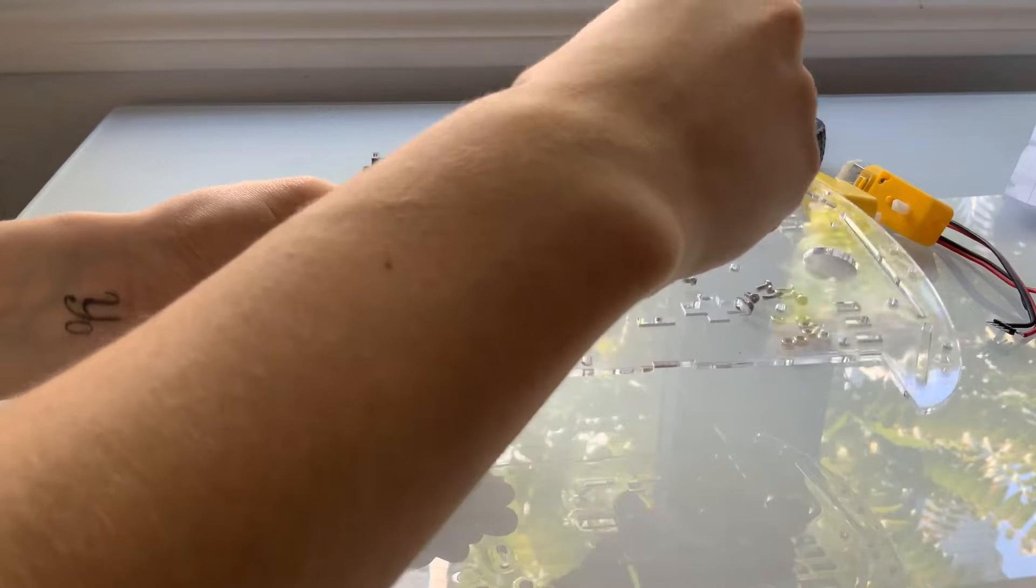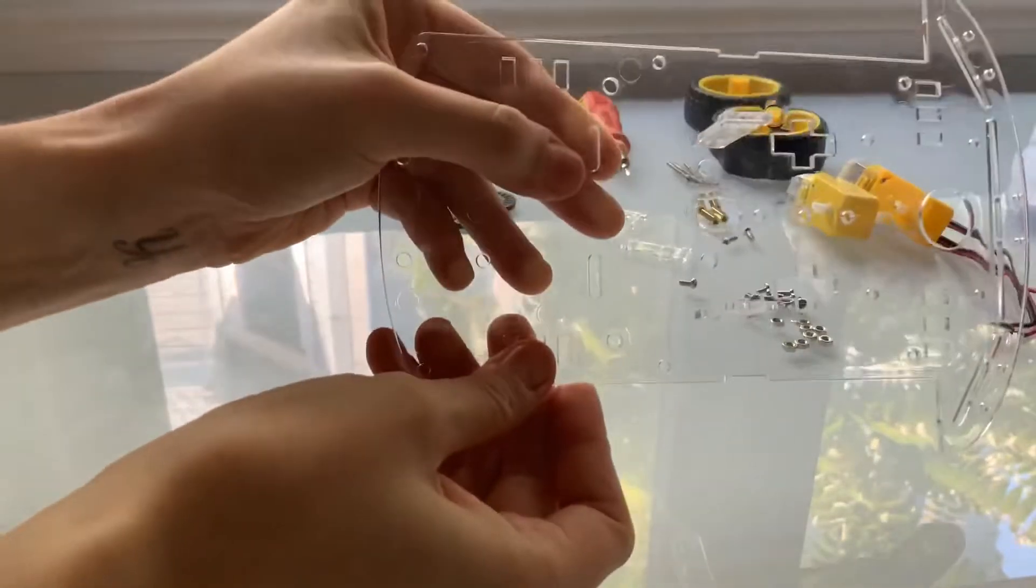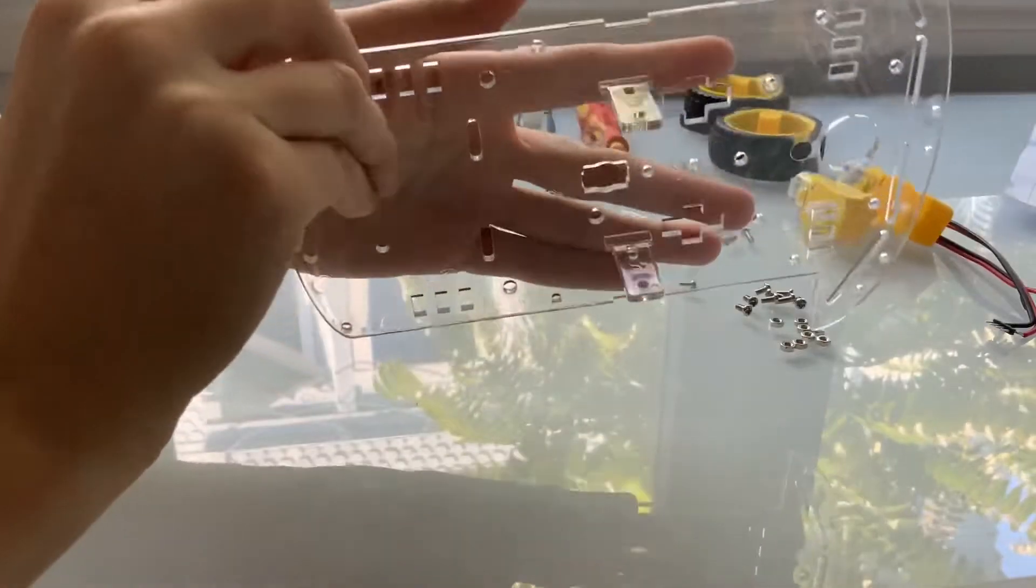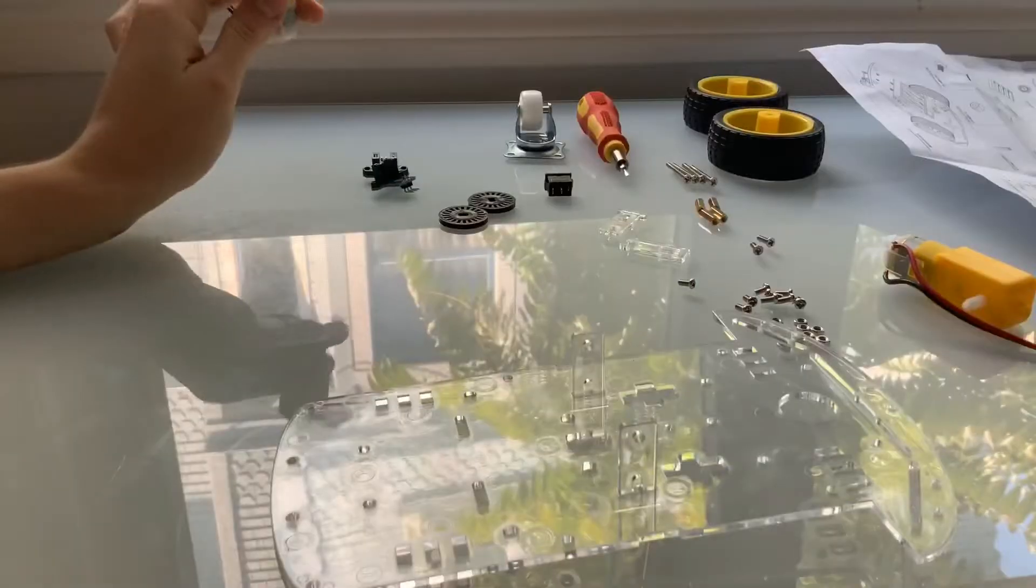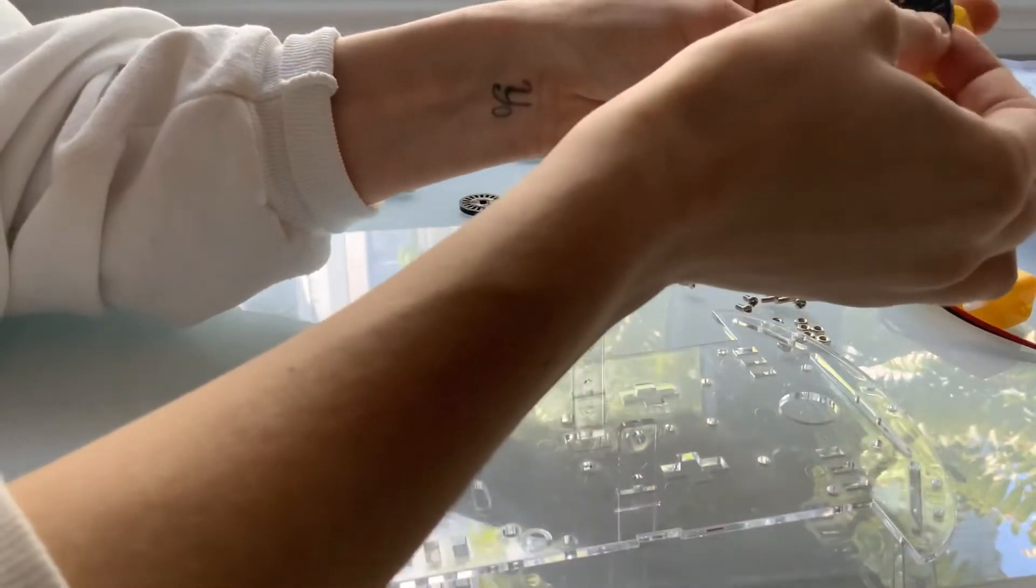Okay, start by grabbing the fasteners and pop them through the holes in the middle of the board like so. Then take the small black wheels and attach them to one side of the motor's axle. Make sure when you're doing this that you don't attach the wheels to the same side on both motors.